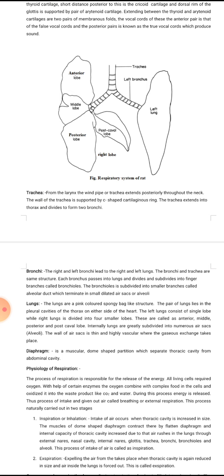Each bronchus enters the lungs and further branches into bronchioles. The bronchioles are subdivided into smaller branches called alveolar ducts which terminate in small dilated air sacs or alveoli.